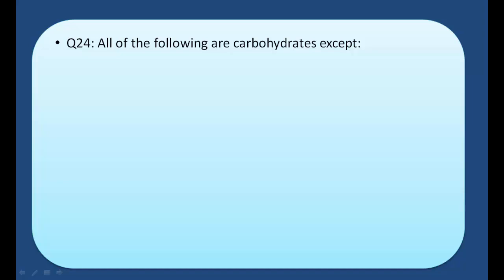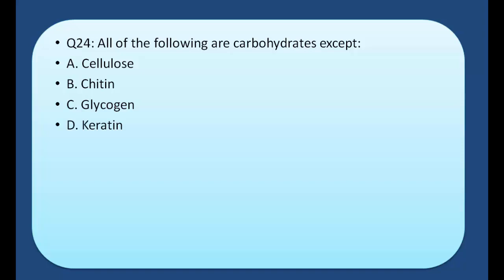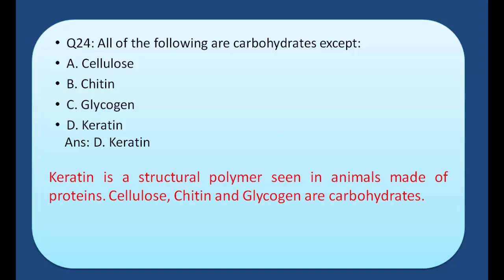Q24: All of the following are carbohydrates except: a) Cellulose, b) Chitin, c) Glycogen, d) Keratin. Answer: d) Keratin. Keratin is a structural polymer seen in animals made of proteins. Cellulose, chitin, and glycogen are all carbohydrates. Therefore the answer is d) keratin.